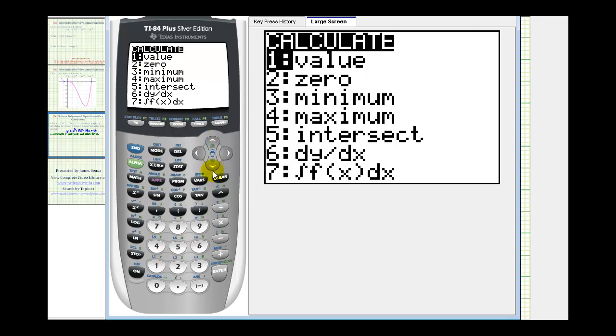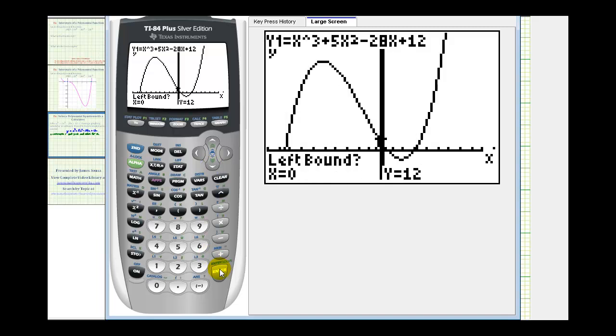Either push two or arrow down and press enter. And now it's going to ask us for the left bound and right bound for each intercept. We can only find one intercept at a time. Let's start with the leftmost intercept and work our way right. Notice how it's asking for the left bound. So I need to move the cursor to the left of this x-intercept here, which in this case will be below.